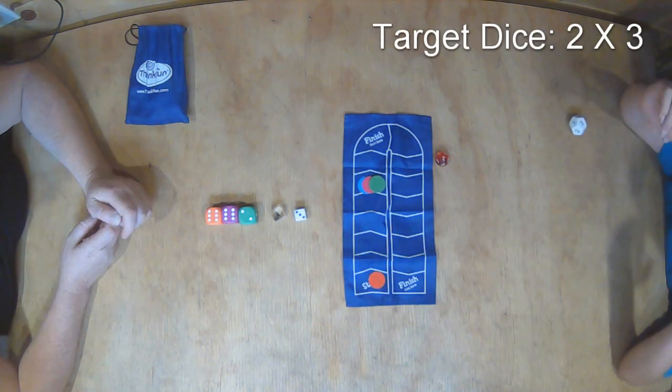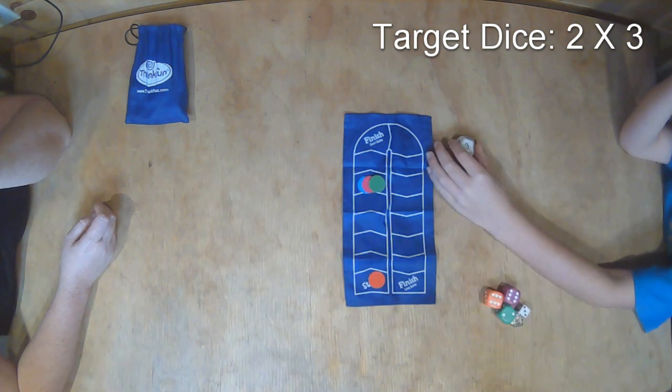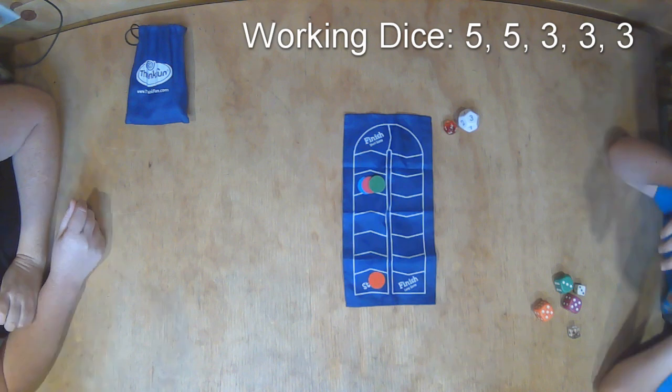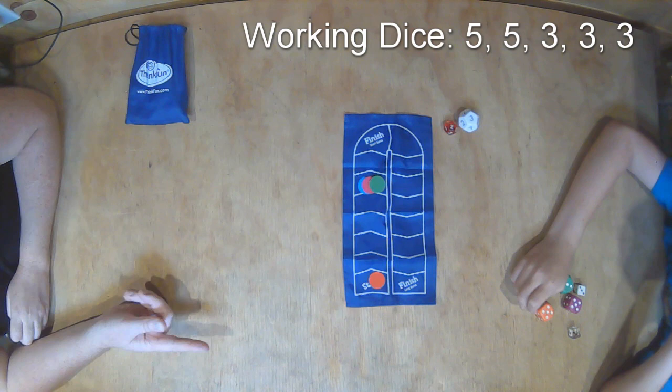Now the boy's turn. The target number is 6. With 2 5s and 3 3s to work with, looks like he settled for 3 plus 3 equals 6, letting him only move 2 spaces.